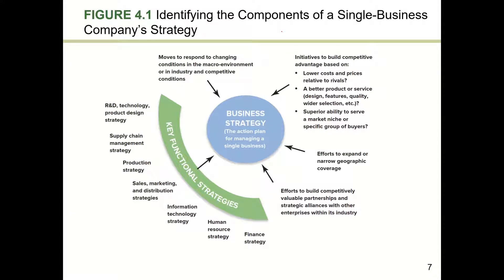Strategy is defined as an action plan — a coordinated set of actions to outperform a company's rivals and gain superior profitability. Strategy consists of moves to respond to changing conditions in the macro environment and in industry and competitive conditions. This includes strategies to shield a firm from competitive pressures or initiate moves to shift those pressures in a company's favor. If an industry is determined to be profitable, we would want to invest aggressively; if not, we may want to sell the business or invest in other industries.